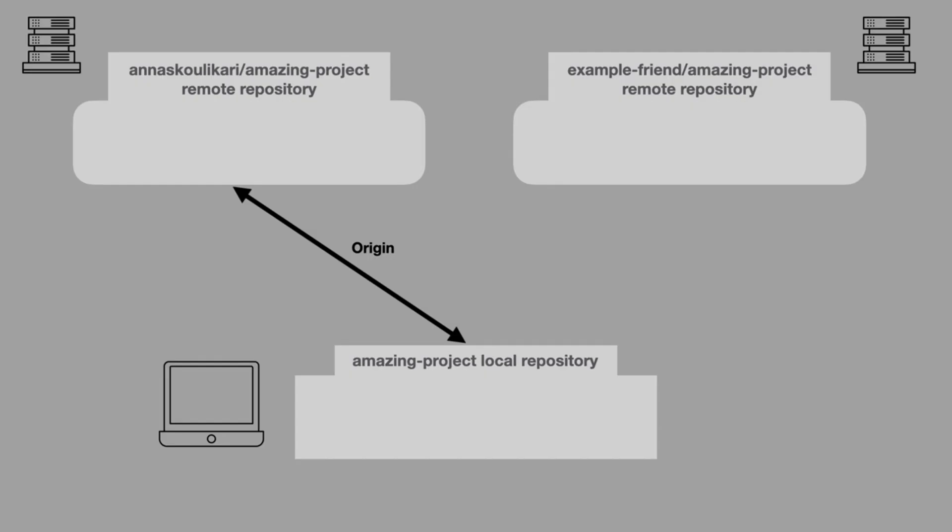So now we can see that we have a link from our friend's remote repository to our local repository. And we can see why we can't name the short name the same as the repository name in GitHub, because there are going to be times where we have multiple people working on the same project but we want links to different remote repositories. Also note that right now we can pull changes from our friend's repository, but we probably can't push to that remote repository because we don't yet have permissions — and that wouldn't be a good idea anyways for our workflow.